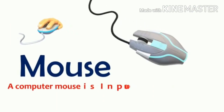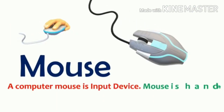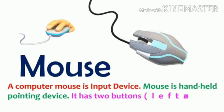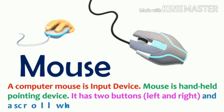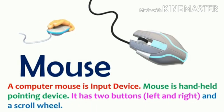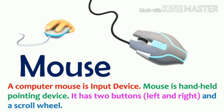Mouse. A computer mouse is an input device. Mouse is a hand-held pointing device. It has two buttons, left and right, and a scroll wheel.